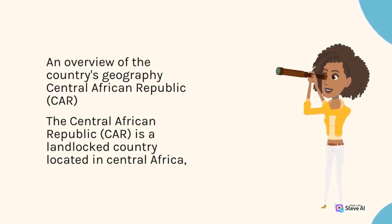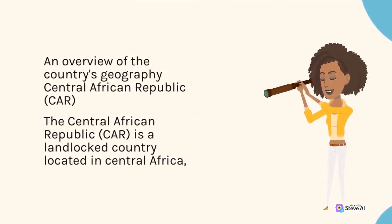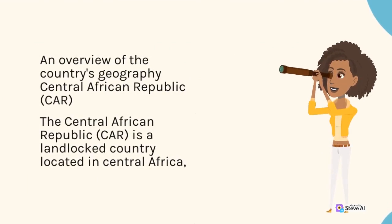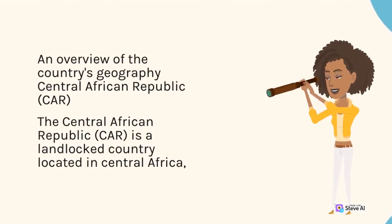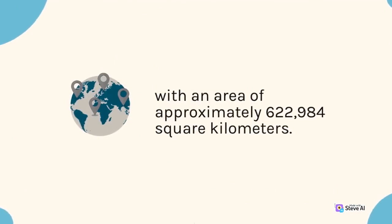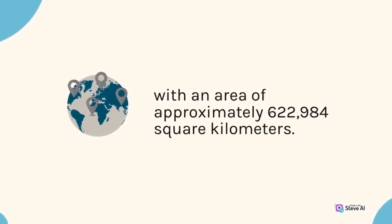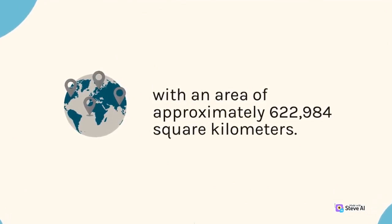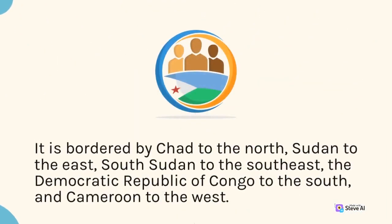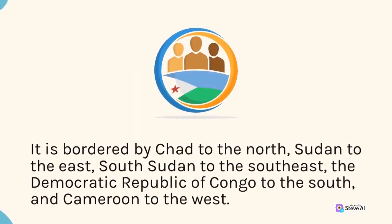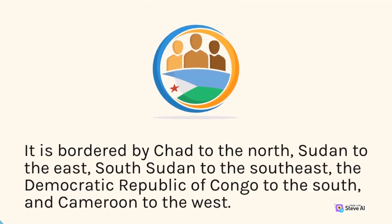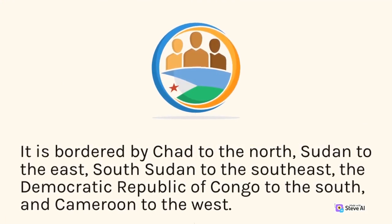The Central African Republic (CAR) is a landlocked country located in Central Africa, with an area of approximately 622,984 square kilometers. It is bordered by Chad to the north, Sudan to the east, South Sudan to the southeast, the Democratic Republic of Congo to the south, and Cameroon to the west.